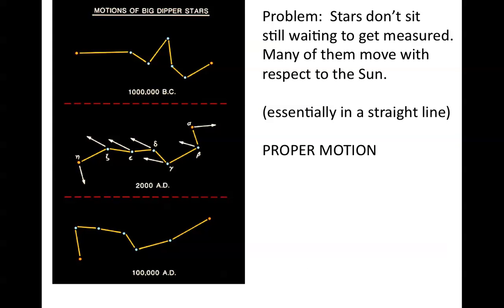This would all be straightforward except for one problem: stars don't sit still waiting to be measured. Many move with respect to the Sun. Because the influence of the galactic center and nearby stars is small, their motion can be treated as straight-line motion at almost any level of accuracy. Take the Big Dipper: right now it looks very Dipper-like, but the stars' proper motions differ in direction and speed. About a million years ago it looked very different, and about a hundred thousand years from now the lip will have opened up and the handle will have bent down.